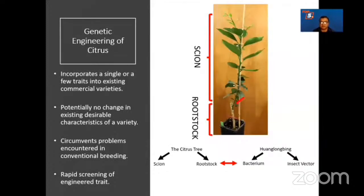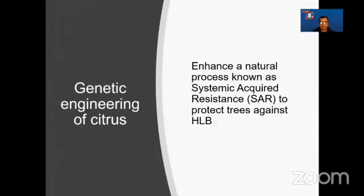Genetic engineering of citrus incorporates a single or a few traits into existing commercial varieties, with potentially no change in existing desirable characteristics. It also circumvents problems associated with conventional breeding. Genetically engineered plants can be rapidly screened to observe whether they are tolerant or resistant to HLB. Our lab has focused on a very specific method of genetic modification — we enhance a natural process known as systemic acquired resistance to protect trees against HLB, and that has been our core focus for the last several years.